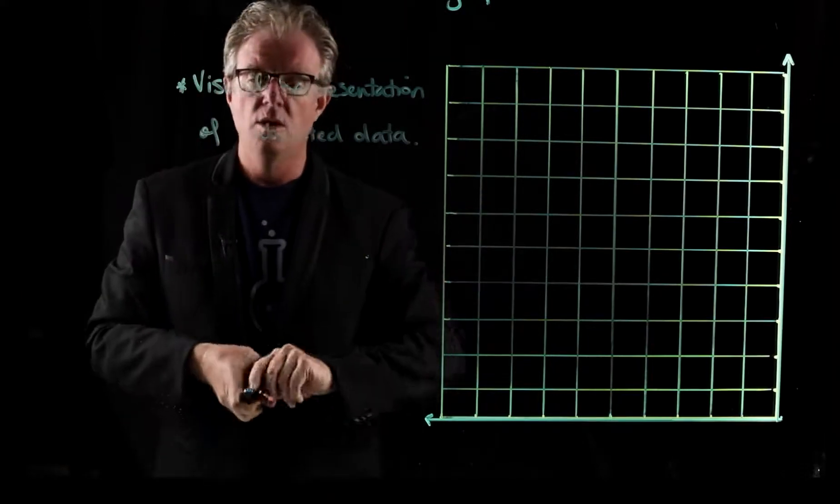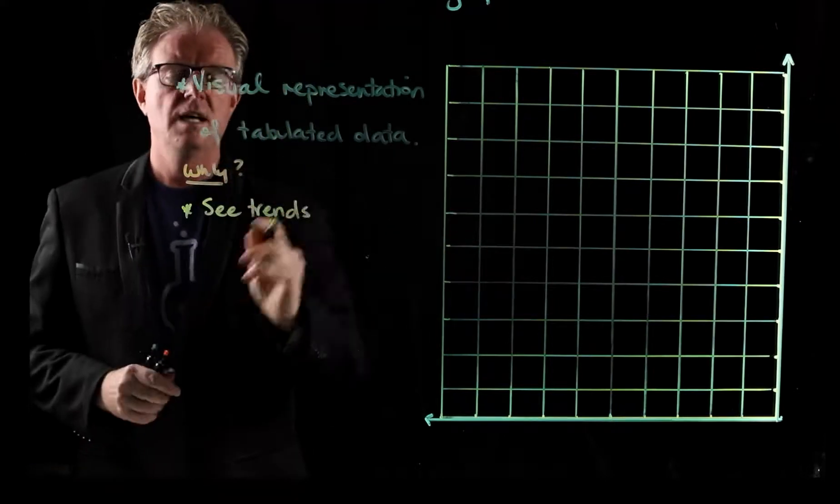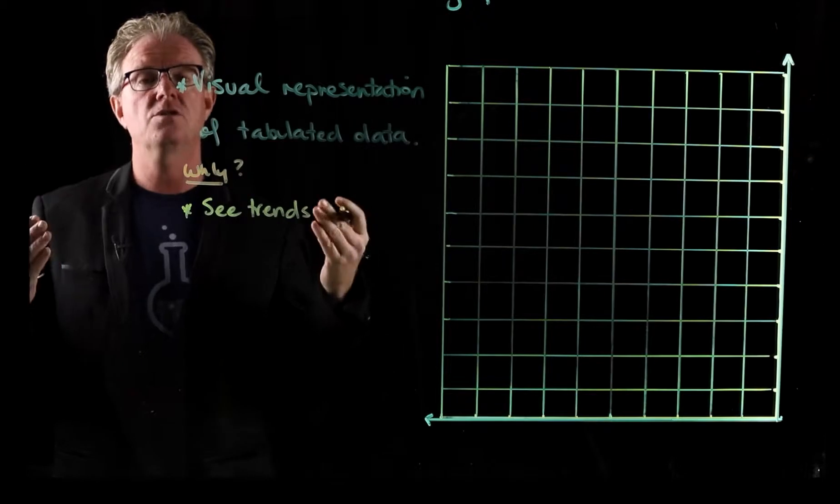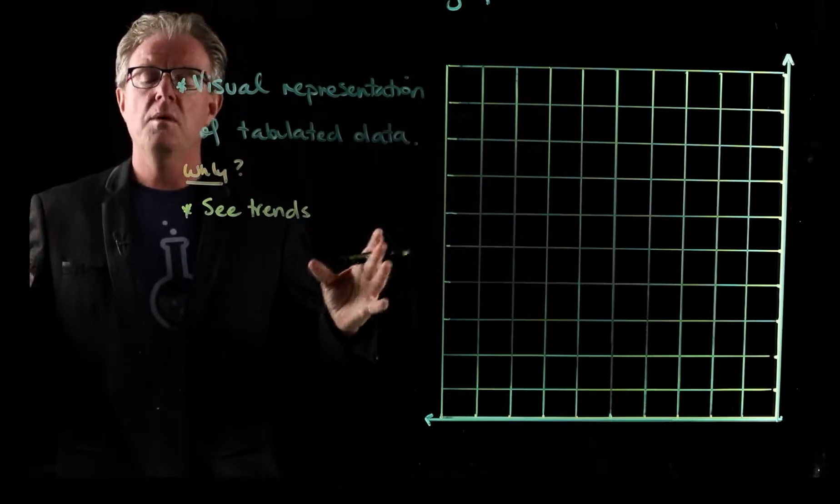Now why do we do that? Why do we want to graph it? Well, it's a lot easier to see trends between variables if you graph it compared to those trends in a table format. Now what do I mean by variables?